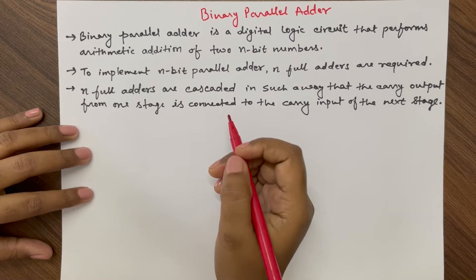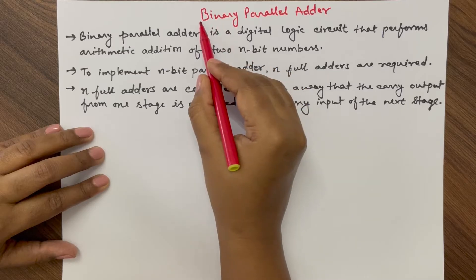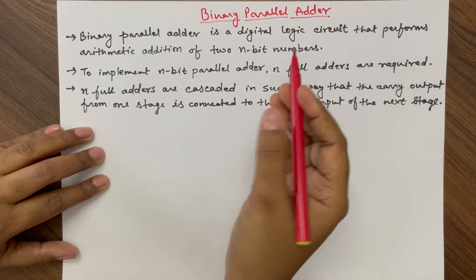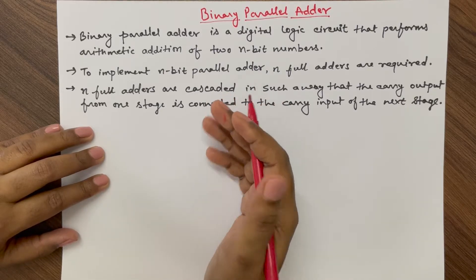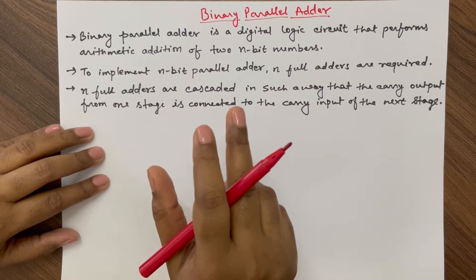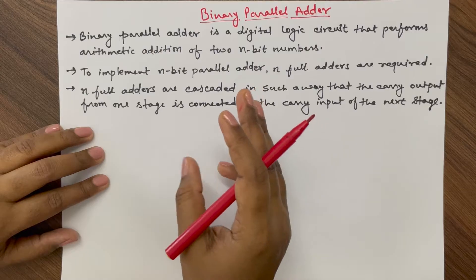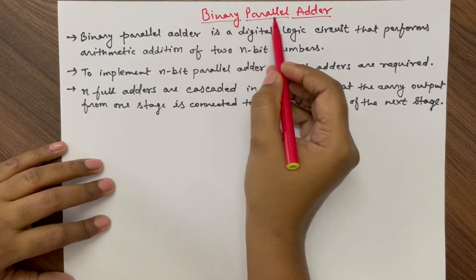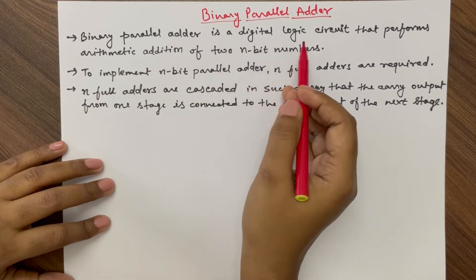Hello friends, welcome to our YouTube channel RF Design Basics. In this lecture we will study about binary parallel adders. In our previous videos we studied about the half adder and full adder. Half adder does the addition of two one-bit numbers and full adder does the addition of three one-bit numbers. For adding two n-bit numbers we need this binary parallel adder, so we can say binary parallel adder is a digital logic circuit.